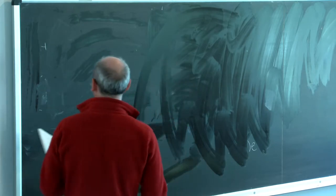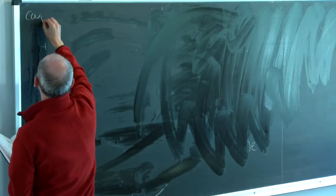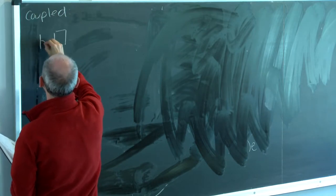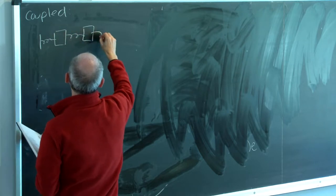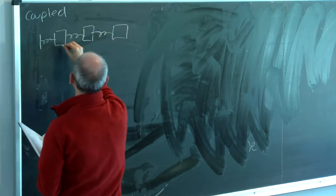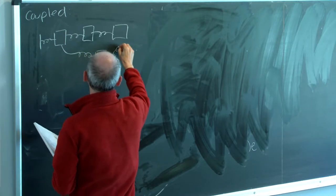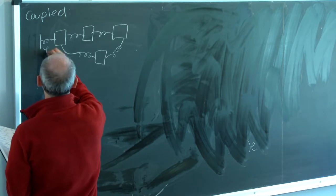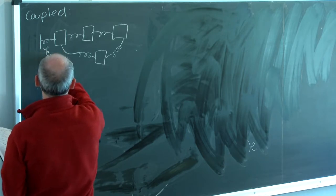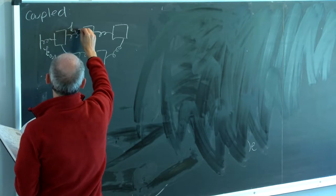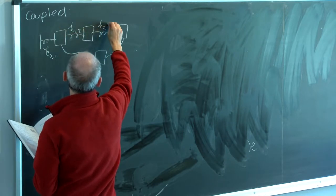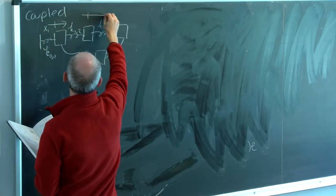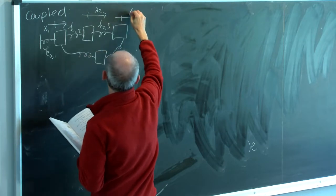When we have a whole bunch of oscillators and couple them—not just one oscillator, but some arbitrary collection of them all coupled to each other, still via linear springs—this could be the spring coupling mass 1 to mass 2, and mass 2 to mass 3. This object has coordinate x1, this object's coordinate is x2, and this object's coordinate is x3.